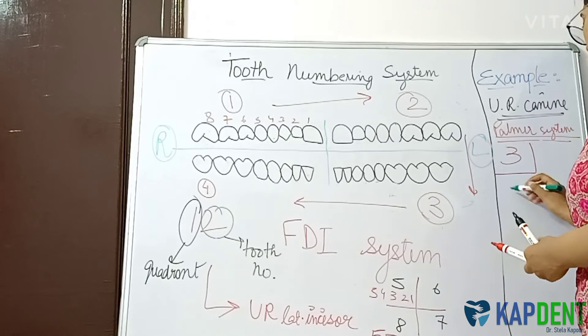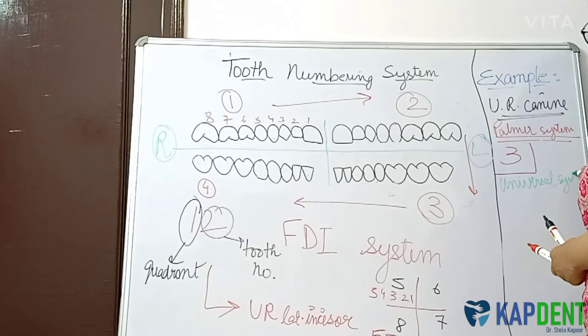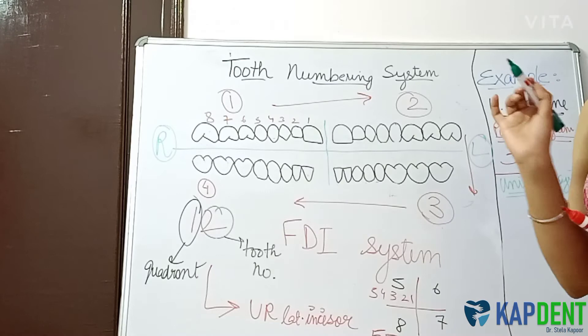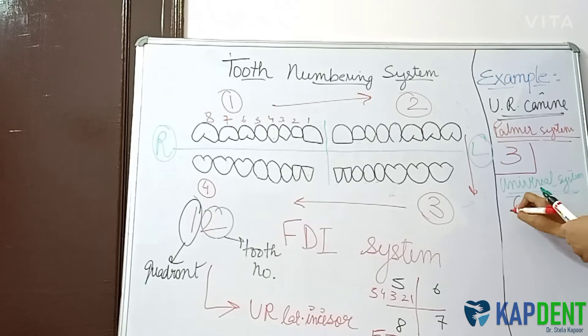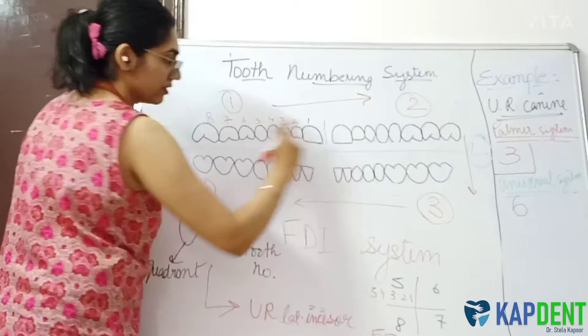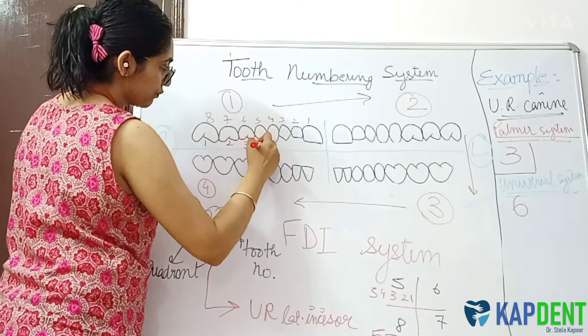In the universal numbering system, each tooth has its own unique number. Starting from the upper right third molar and counting along the direction — 1, 2, 3, 4, 5, and 6 — the sixth tooth is your upper right canine. So number 6 is assigned to the upper right canine in the universal system.